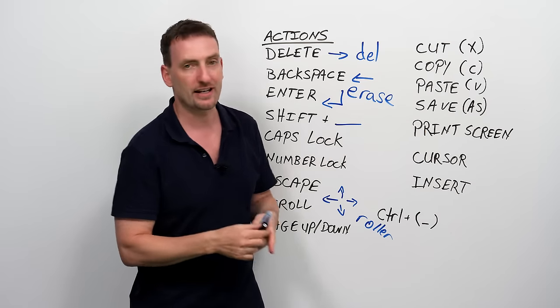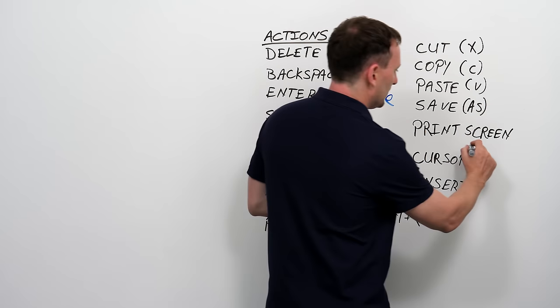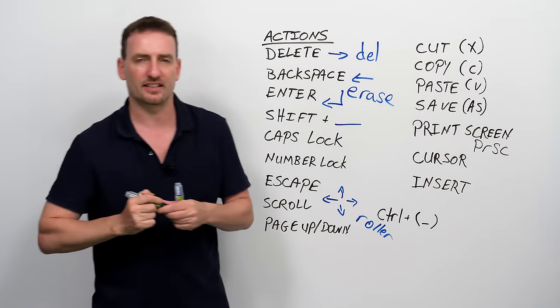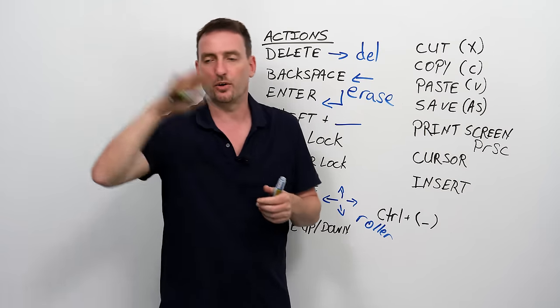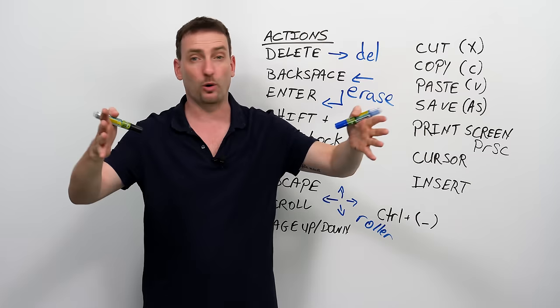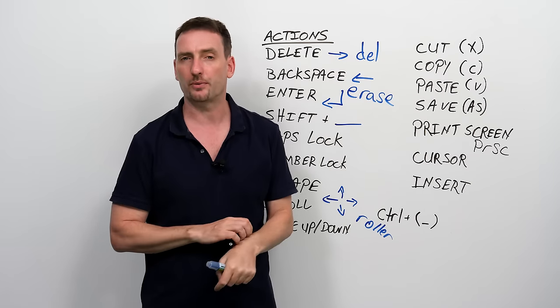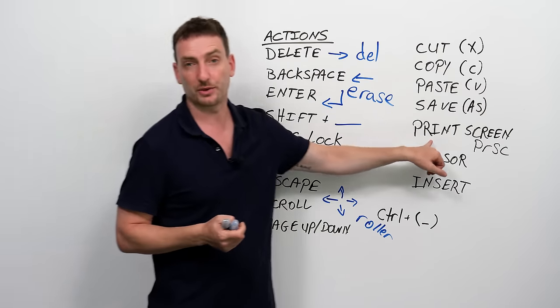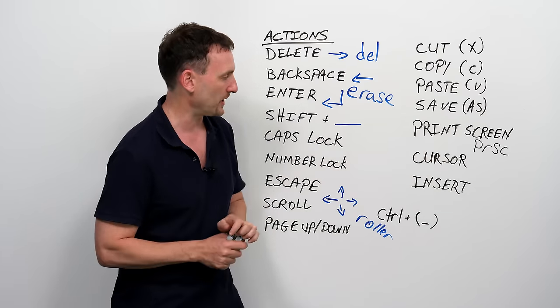You can just press the print screen button. I believe it'll be like something like that, P-R-S-E or something. You click that, you go to another file, Ctrl V, and it'll give you that whole page. And then you can do whatever you want with it later, save it, and then make the adjustments later. A very useful button to use.